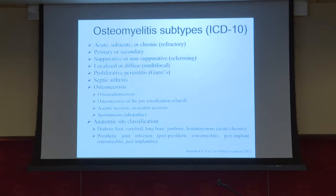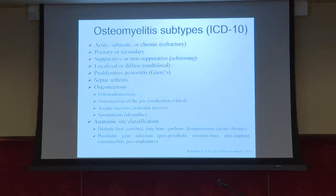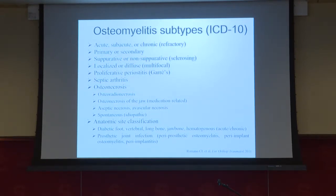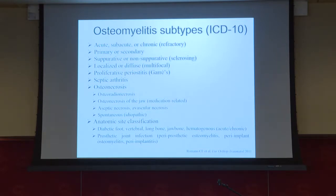There's acute, subacute, and chronic — and then refractory chronic cases that don't respond to treatment. There's primary or secondary, for example secondary to diabetes or immunosuppression. There's suppurative versus non-suppurative, meaning whether there's pus or not. There's localized or diffuse. Then there's Gare's osteomyelitis or proliferative periostitis. There's septic arthritis, basically an infection in the joint. This field is often called infectious bone disease or bone and joint infections. Then there's osteonecrosis, which is basically when the bone dies after osteomyelitis, and radiation osteonecrosis falls under that — it's actually a septic process. Osteonecrosis of the jaw, and dentists are familiar with medication-related osteonecrosis of the jaw, MRONJ.